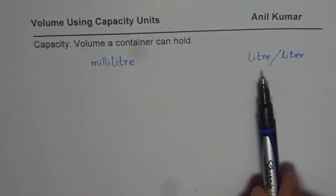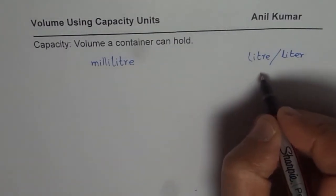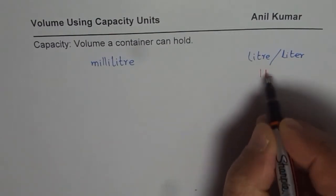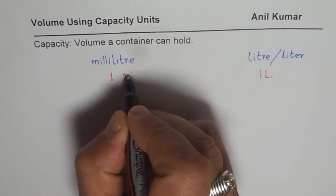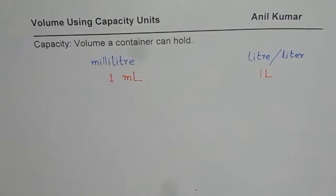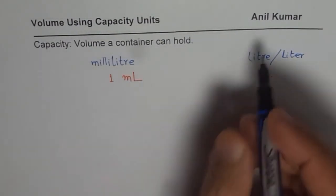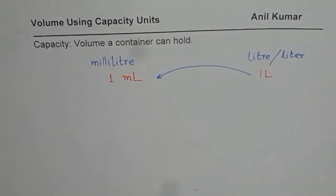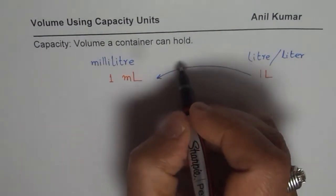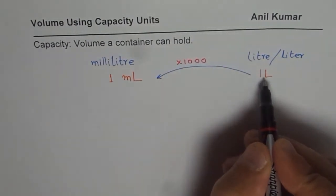Milliliters and liters are connected by a factor of thousand. Liter is also written by capital L, and milliliter is written as small m and capital L. Milliliter is much smaller — a thousand times smaller than a liter. So one liter is actually equal to how much milliliters? If you have to convert from liter to milliliter, you multiply by thousand. So one liter equals one thousand milliliters.